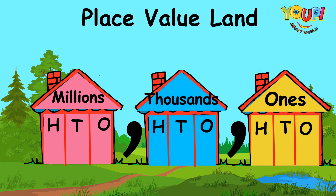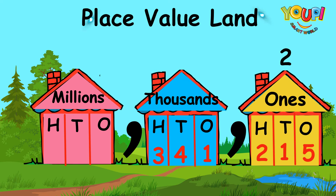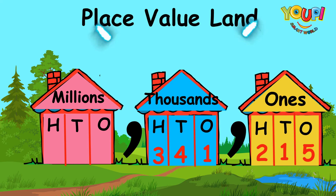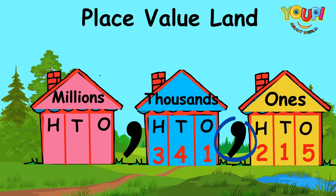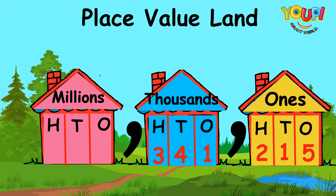Now let's use the story and add some numbers. Are you ready? Let's go! How would you read this number? You begin by reading the numbers in the house farthest to the left. When you get to a comma, or the gate, you have to say the last name of the family.